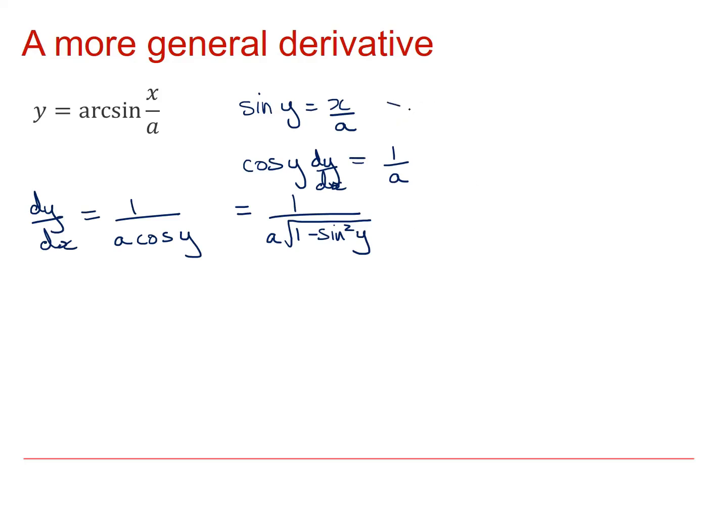And again, from up here, I know that sin y equals x over a. And so this expression becomes one over a times the square root of one minus x over a, all squared.